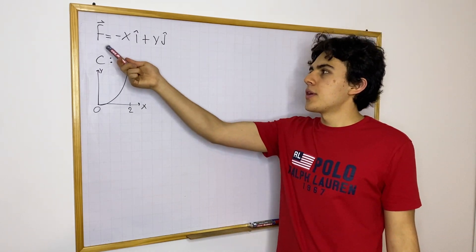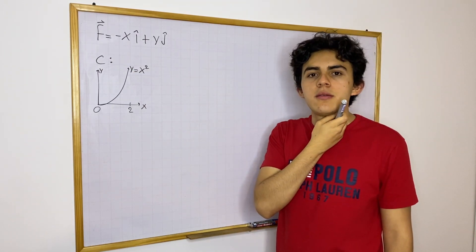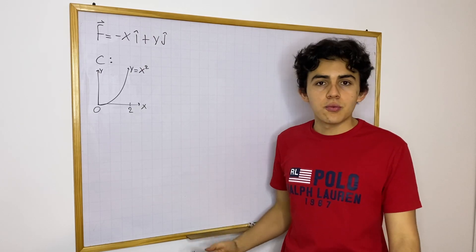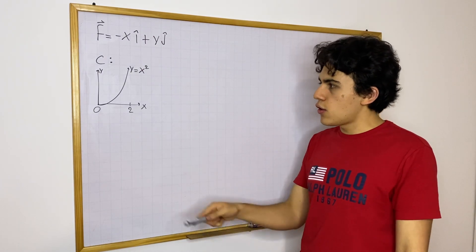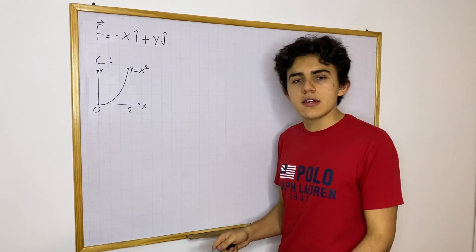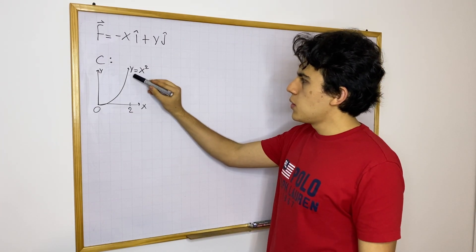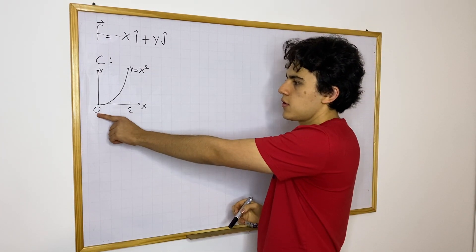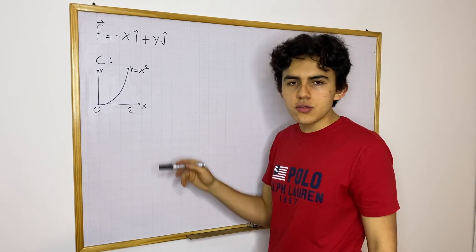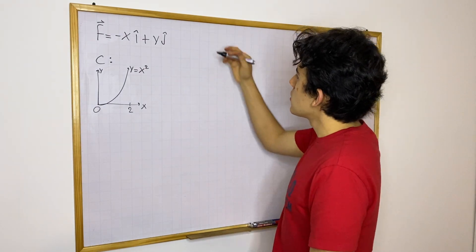So basically let's say we have this vector field, minus x i hat plus y j hat, and let's say the curve that we want to take the line integral over is going to be y equals x squared from x equals zero to x equals two. So let's do it.